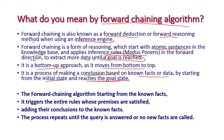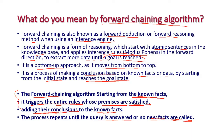The forward chaining algorithm starts from known facts available in the knowledge base and triggers all the rules in the knowledge base whose premises are satisfied, adding their conclusions to the known facts. This process is repeated until the query is answered or no new facts are added. This is called forward chaining.